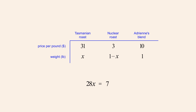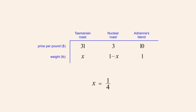We then divide both sides by 28, allowing us to cancel the twenty-eights in the numerator and denominator of the fraction on the left. This leaves us with the equation x equals 7 over 28, or x equals 1 quarter. So to create one pound of a $10 per pound blend, Adrienne must mix one quarter pound of Tasmanian roast with 1 minus 1 quarter, or three quarters pound of nuclear roast.